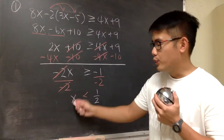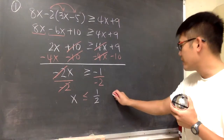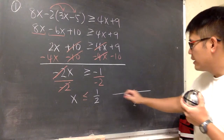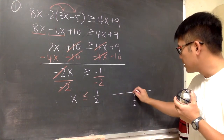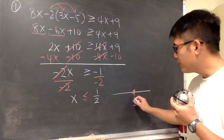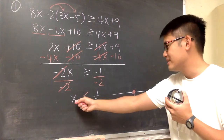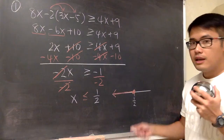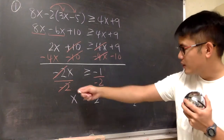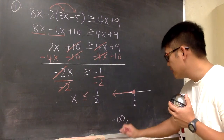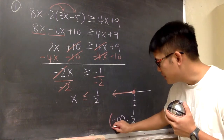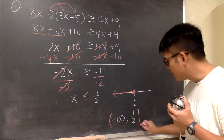So x is less than or equal to one half — that's the inequality answer. For the graph, we mark one half on the number line. Since it's less than or equal to, we use a closed circle. We go toward the left. For interval notation: it goes from negative infinity to one half, so we write negative infinity with a parenthesis, and one half with a square bracket.